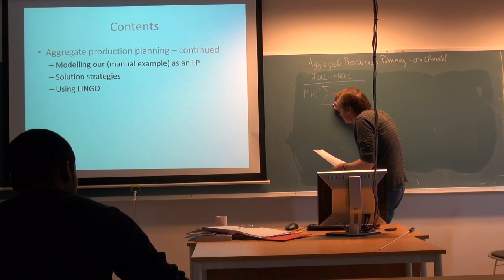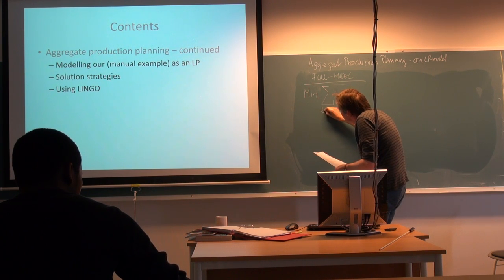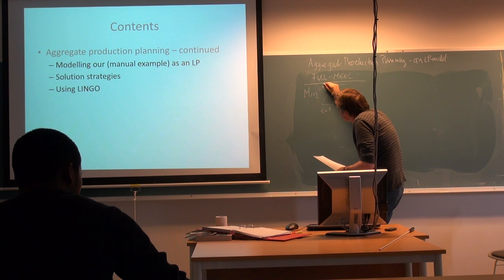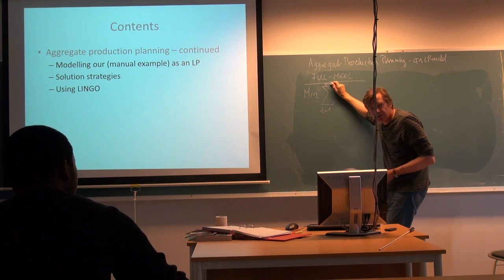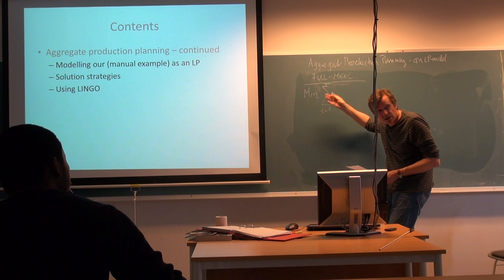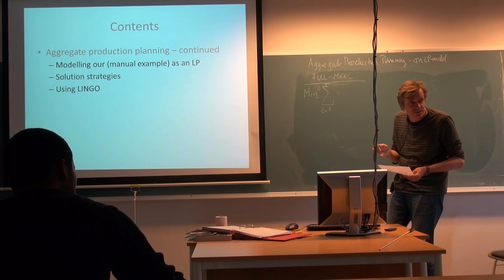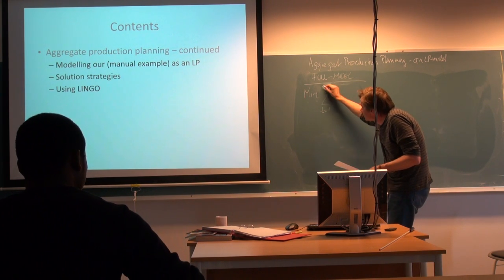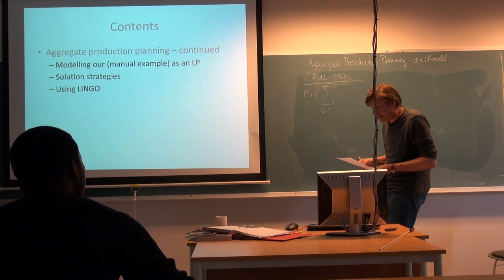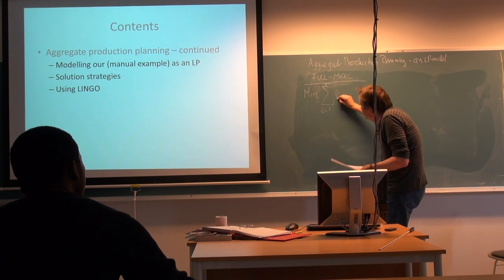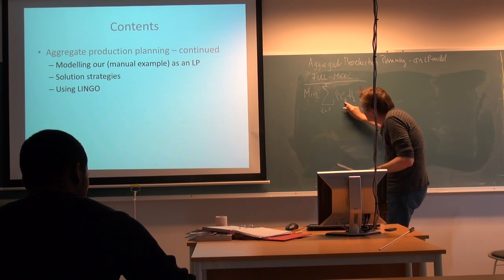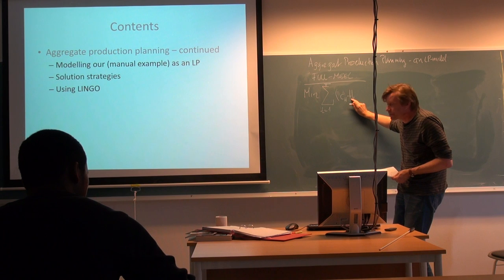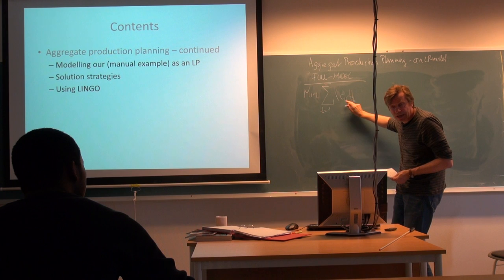Now we can sum up here from t equals one, and this is a constant I actually forgot to define. We need to have our time horizon as a constant — that's the kind of number we decide on. In our example it was six periods. It could be twelve or any number, but this is a constant that should have been listed among the other constants. Then we have our hiring costs, constructed like this: the cost per person hired times the number of persons hired in period t. For each of our periods, of course, you have to add these up together.